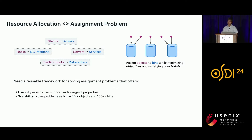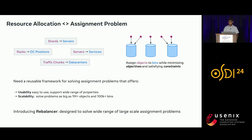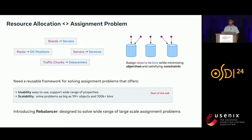There are two requirements for such a framework. It should be easy to use, supporting a wide range of modeling expectations. And it should be able to scale to solve a large number of large problems with millions of objects and 100K+ bins. What we have built is something called Rebalancer, designed to solve a wide range of large-scale assignment problems. In the rest of the talk, we'll cover how Rebalancer addresses usability and scalability.